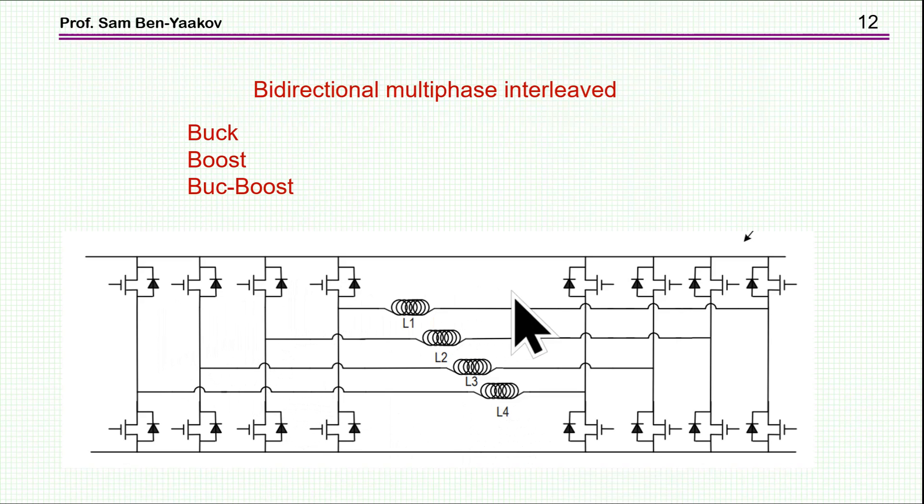First of all to sort of share the currents between a number of transistors, because the current is just too high for one transistor. And then also by having this multi-phase we can have interleaved.